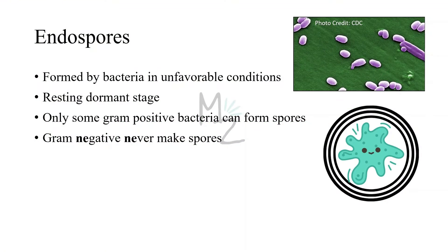Endospores are formed by bacteria in unfavorable conditions like food scarcity and desiccation. Endospores are a resting dormant state. Only some gram-positive bacteria can form spores — not all. Gram-negative bacteria never make spores. As you can see, endospores are bright, refractile, and kind of round in shape.